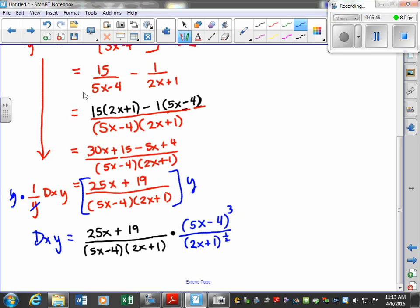Now we can see some things simplify here. This 5x minus 4, we can take one of those terms out and then simplify in the bottom as well. So our simplified answer is going to be this 25x plus 19. Nothing simplifies there. Here, one of the 5x minus 4 terms cancels out and one of them here. So that means how many of them are left in the numerator? Two of them. Good.